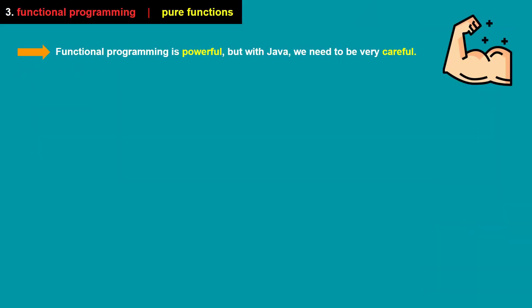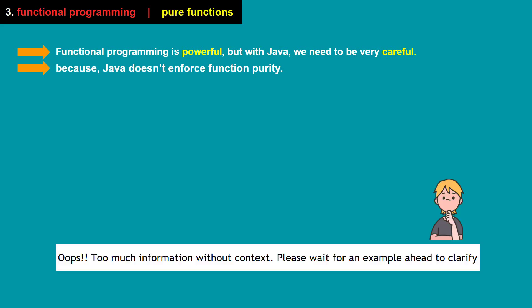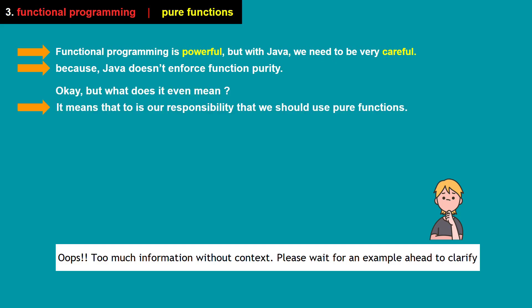Functional programming is a very powerful tool, but with Java we need to be very careful because Java doesn't enforce function purity. There are many purely functional languages like Haskell that enforce functional purity, but Java does not. So we need to be cautious — it's our responsibility to use pure functions when using streams.